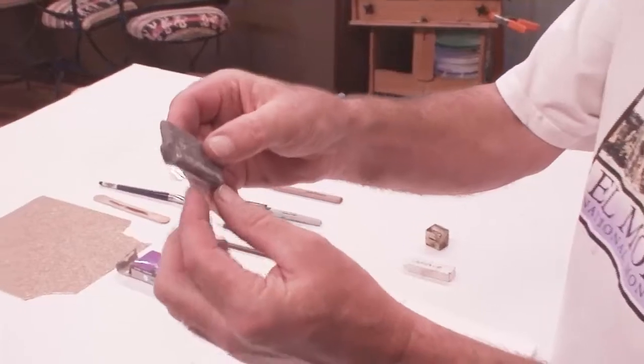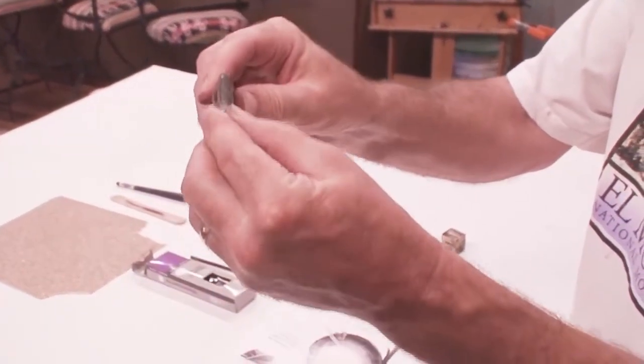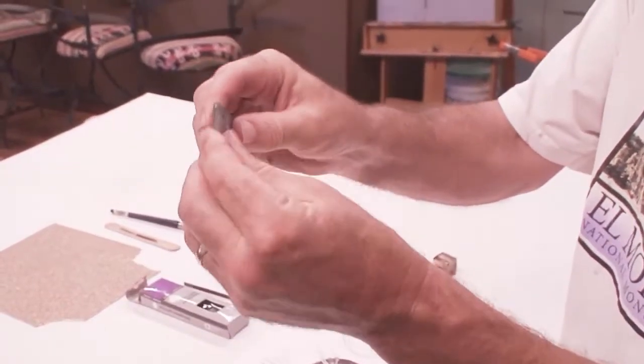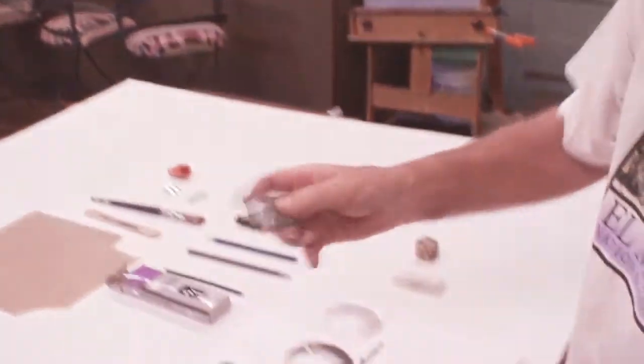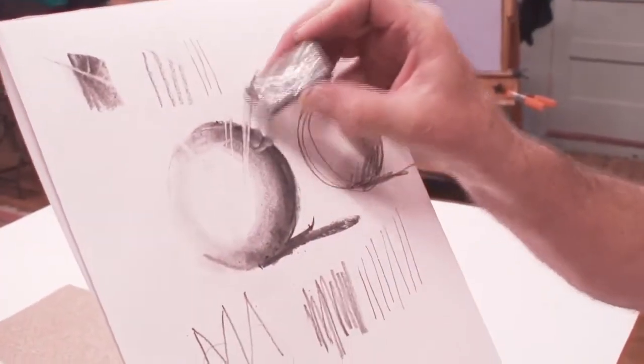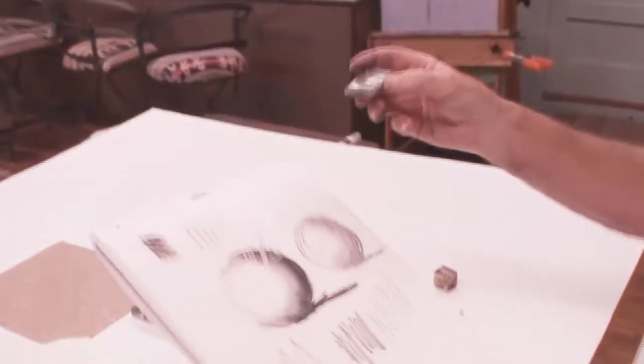And this is my kneaded eraser. This is a cool little eraser because it's real soft and you can knead it like bread. You can make a very sharp point with it and then cut a very fine line on the drawing. Watch this. See I can make a very sharp line. And what it's doing of course is removing the graphite.